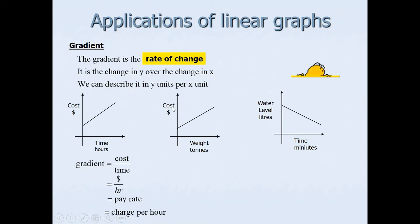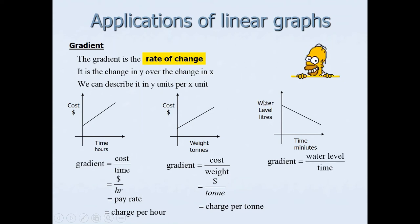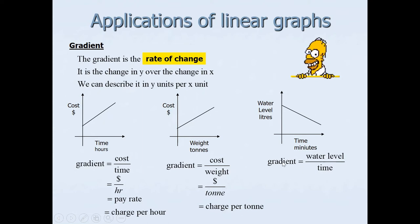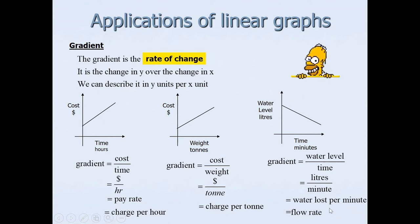For the second graph, cost is in dollars and weight is in tons with a positive slope, so gradient is cost divided by weight — dollars per ton, giving the rate as charge per ton. The third graph shows water level in liters and time in minutes. Gradient is water level over time — liters per minute. It's 'water lost per minute' because the slope is decreasing; if it were positive, the tank would be filling. This is the flow rate.